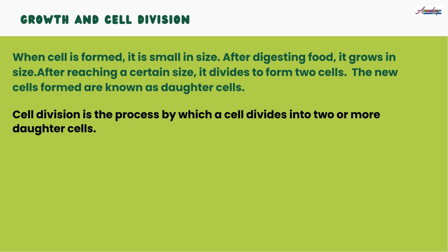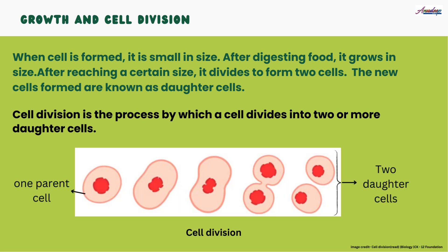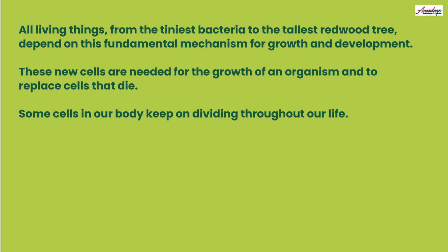Cell division is the process by which a cell divides into two or more daughter cells. You can see in the figure that one parent cell starts growing, then its nucleus starts to divide, then the cytoplasm and cell membrane also divide to form two new daughter cells. All living things — from the smallest bacteria to the tallest tree — show growth and development, and new cells are needed for the growth of an organism and to replace cells that die.